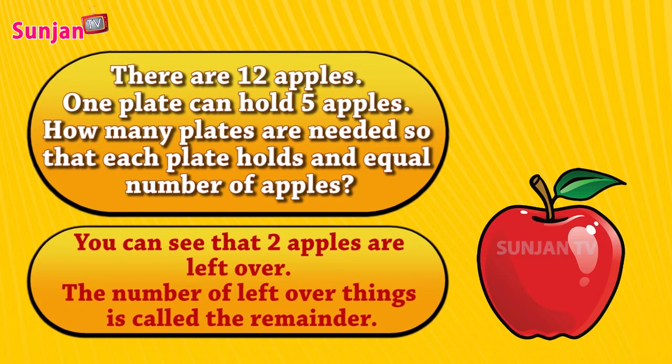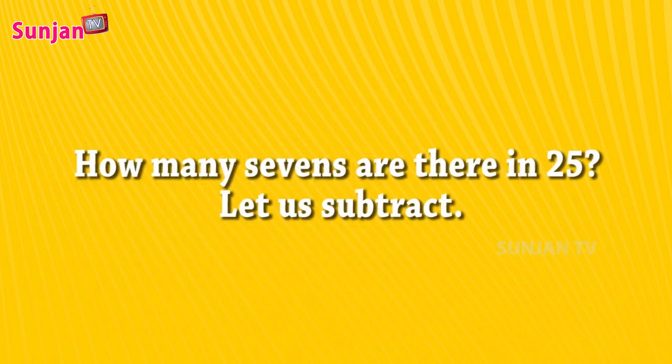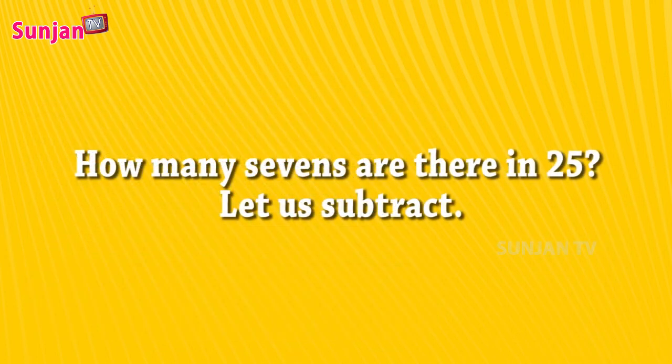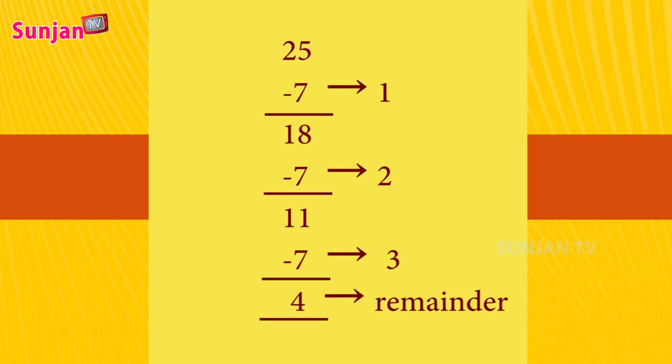How many sevens are there in 25? Let us subtract. Solution: 25 minus 7, the remainder is 18. 18 minus 7, the remainder is 11. 11 minus 7, the remainder is 4. We have three sevens in the division of 25, and 4 is the remainder.